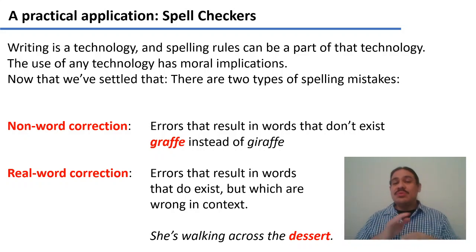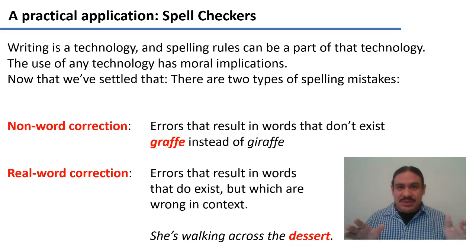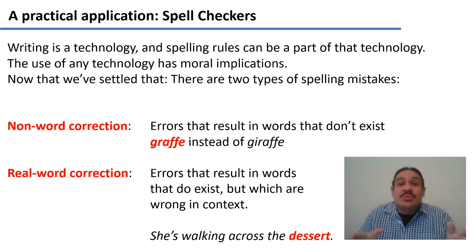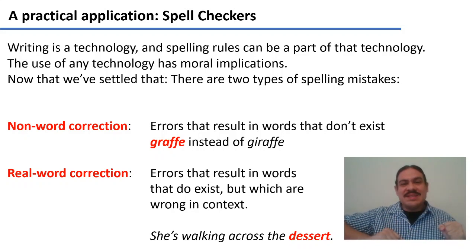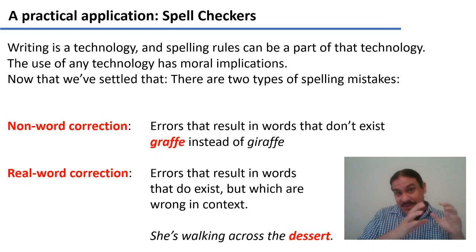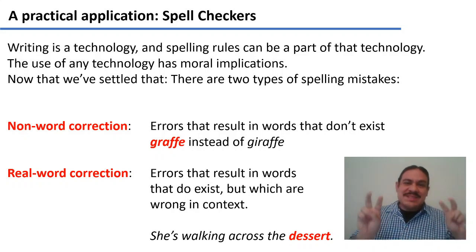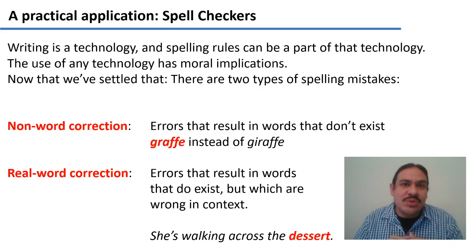And when we use any technology, there are moral implications to how we're using it and how we choose to deal with problems in it. Now that we have discussed that, we can take a look at how the computer can find variations in your spelling or spelling mistakes, knowing how loaded those two words are.